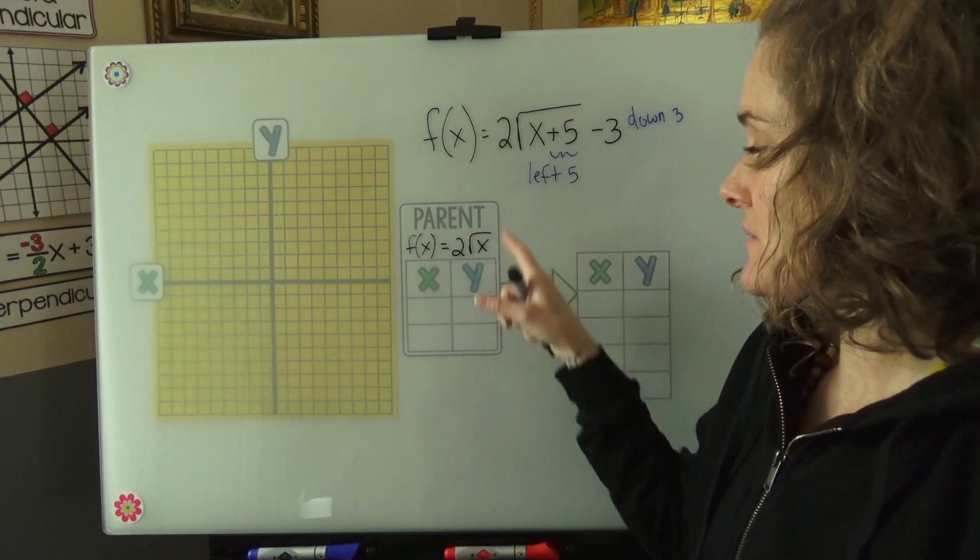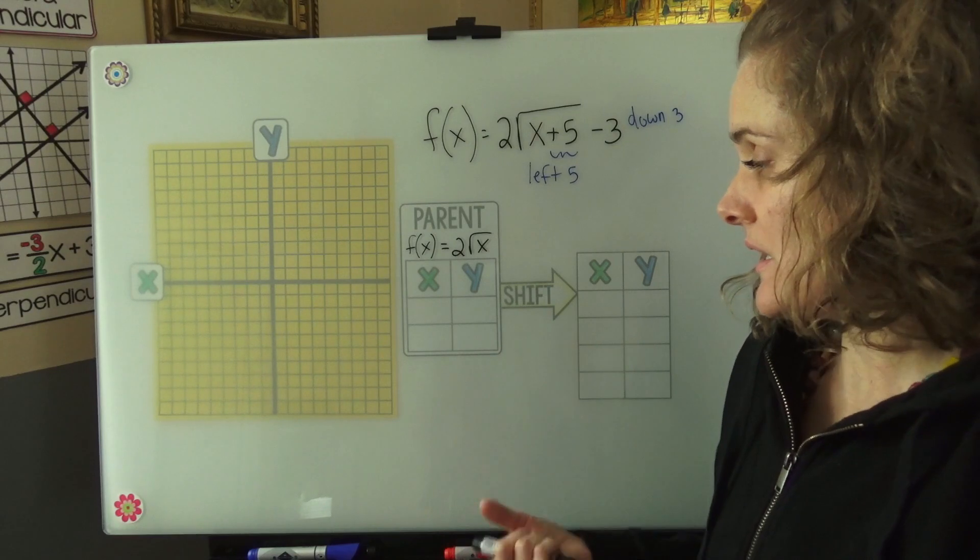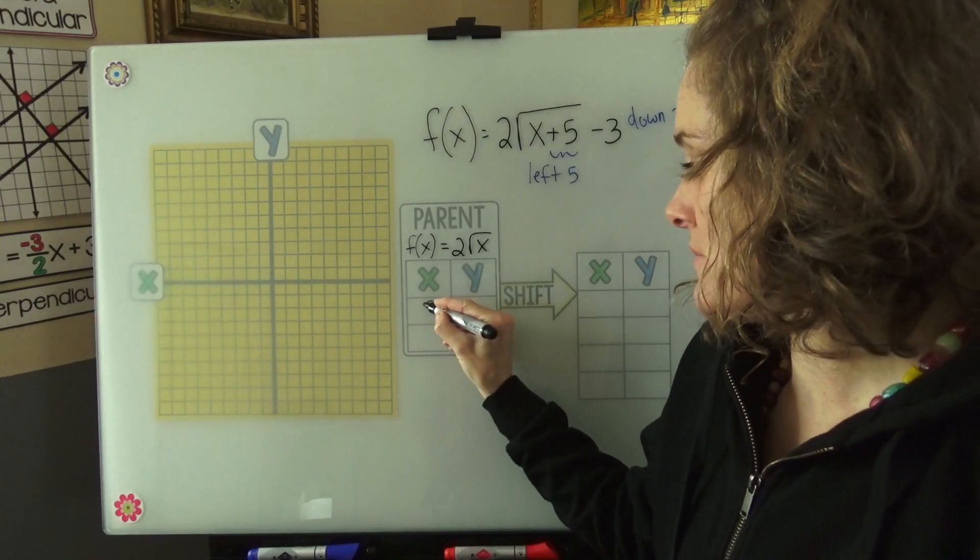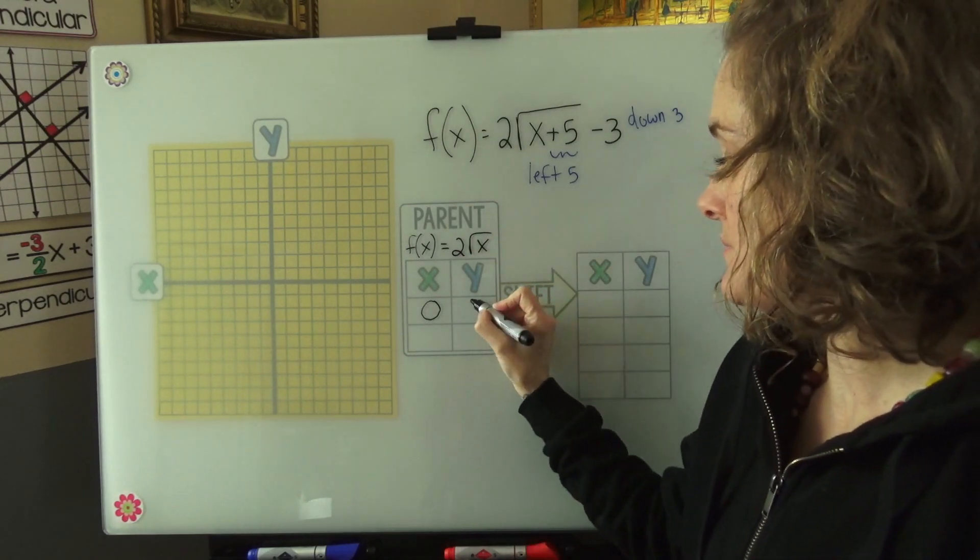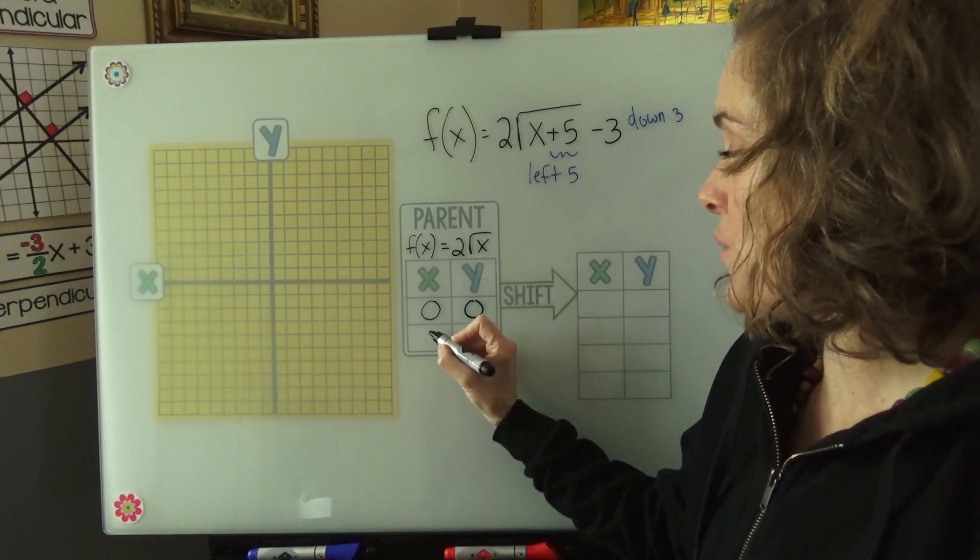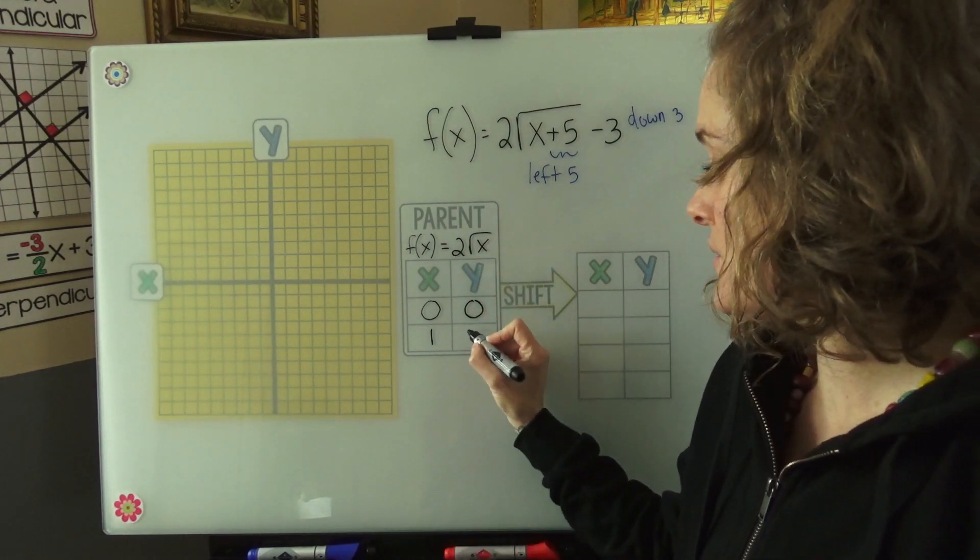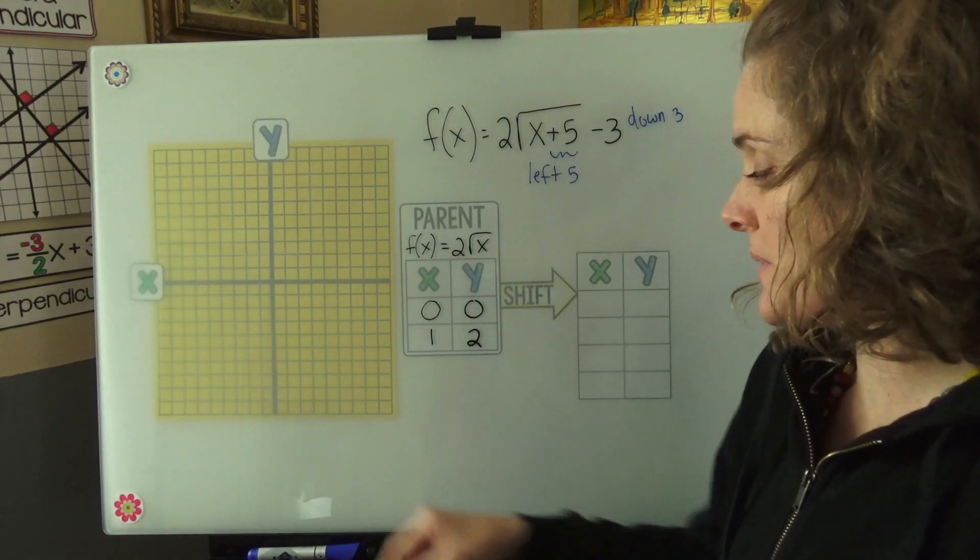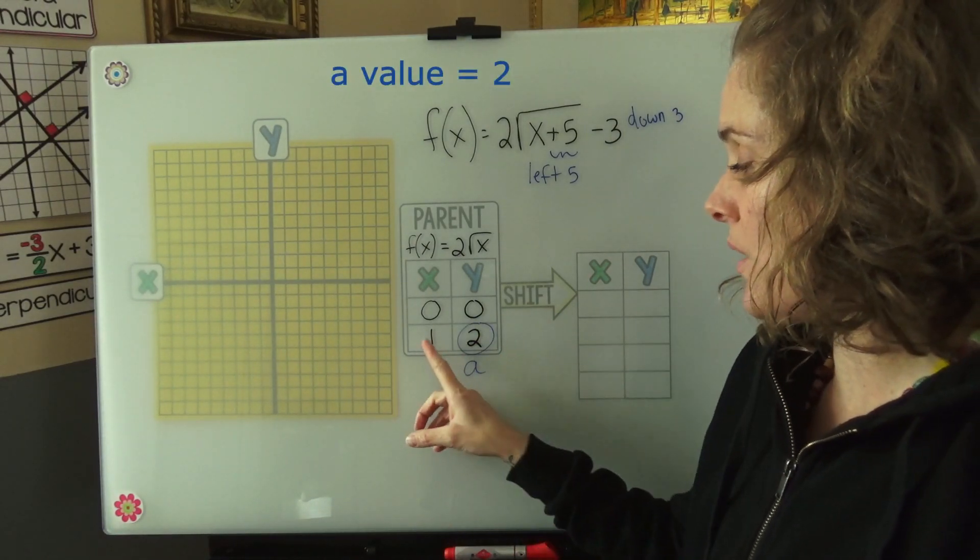Let's plug in some points here to get a couple points for our parent function. The easiest point to plug in, of course, is 0. 2 times the square root of 0 is just 0. We can also plug in 1. Square root of 1 is 1. 2 times 1 is 2. Now this will always be the a value. Whatever the a value is, if you plug in 1, you'll get out the a value as your y value.